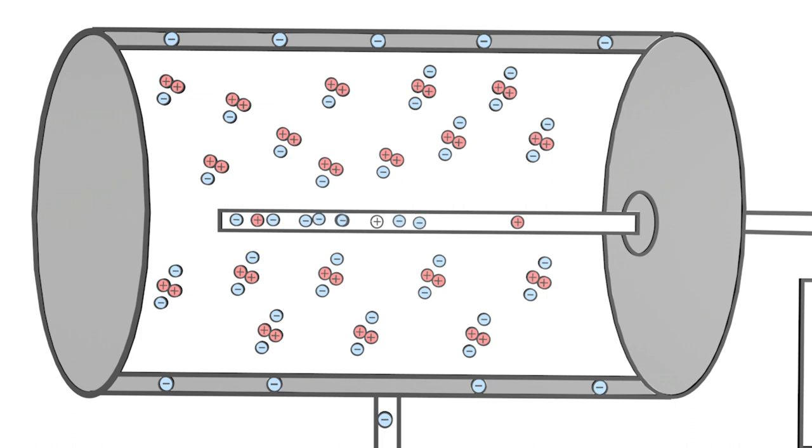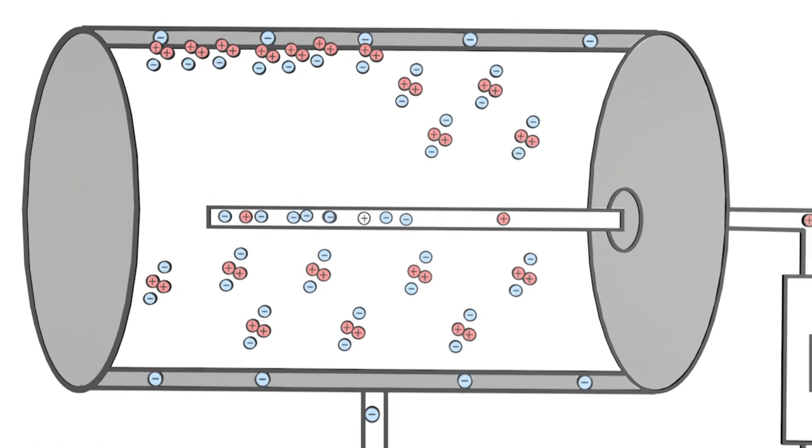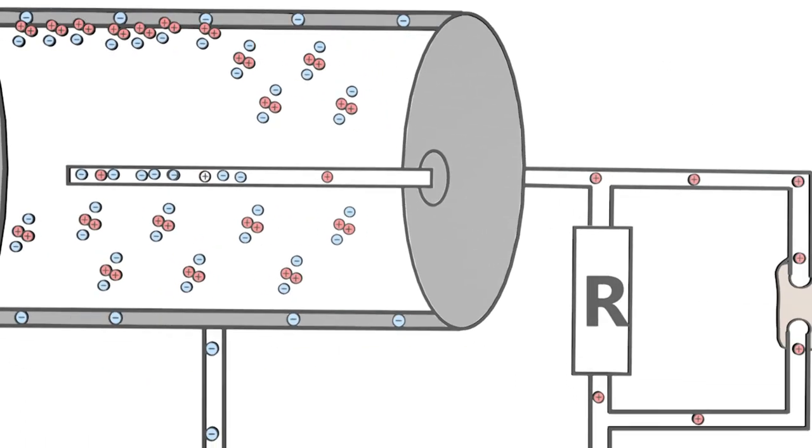The now positively charged noble gas atoms are attracted to the negatively charged cylinder wall, where they recombine with electrons, so that they are neutrally charged again. The electrons in the wire now flow to the positive pole of the connected power supply unit.